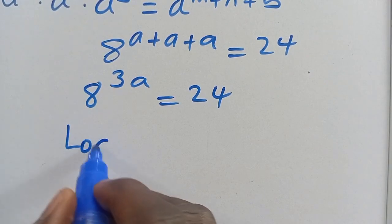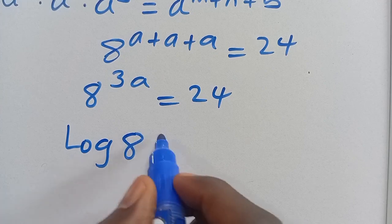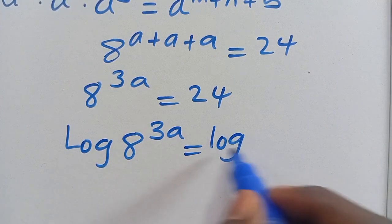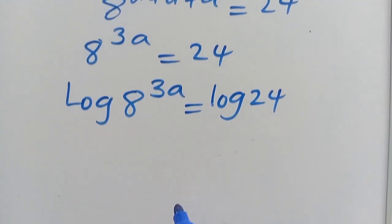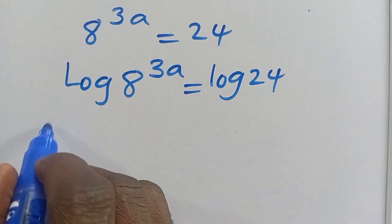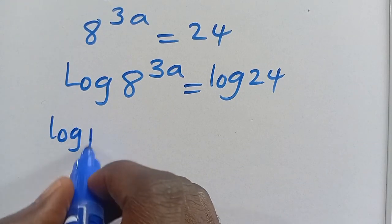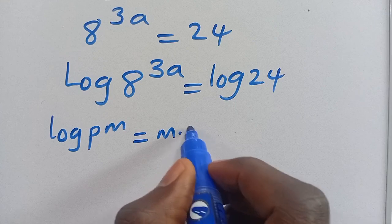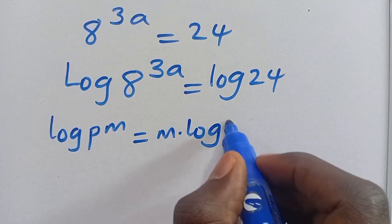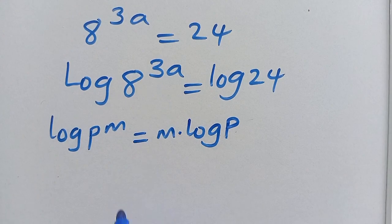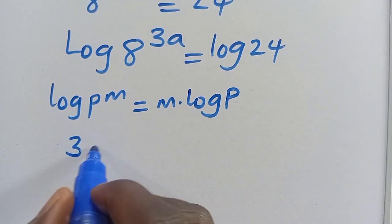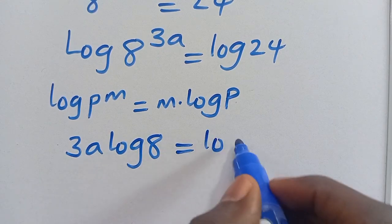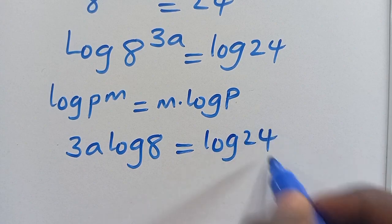Let's introduce log to both sides. We have log of 8 to the power of 3A equals log 24. Recall that when we have log P to the power of M, the power M comes down as M multiplied by log P. Applying this power law, we get 3A multiplied by log 8 equals log 24.